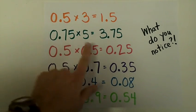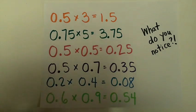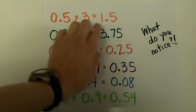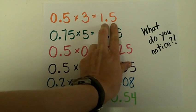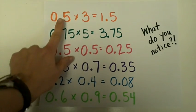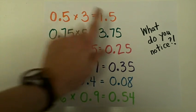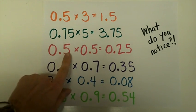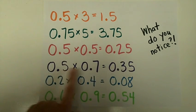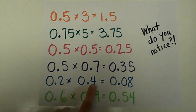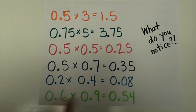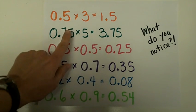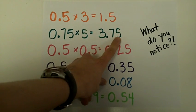I hope that as you did these problems you noticed a pattern. If you take the two factors that you multiply together, the product still has the same numbers you would expect as if these were whole numbers. Notice, if you took away the decimal and thought about 5 times 3, you would get 15. If you looked here, 5 times 5 would make 25. 5 times 7 makes 35. 2 times 4 makes 8. And 6 times 9 equals 54. If we had done 75 times 5, we would have gotten 375.